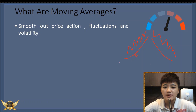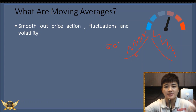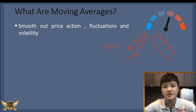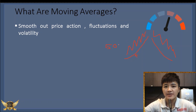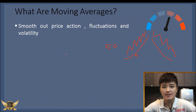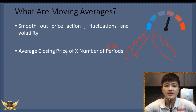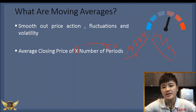Basically, how is this line calculated? For example if you are using a moving average of 50, what this means is that this line is produced by taking the average closing price of the past 50 candles, averaging that up divided by 50, then you get this line. In a way it's like a best-fit line. Your moving average is the average closing price of X number of periods — 50 periods if using 50, 20 periods if using 20.